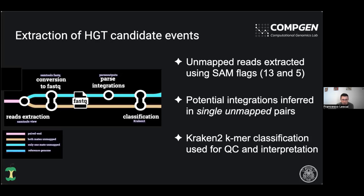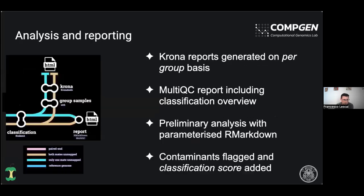We use the bitwise flag 13 and 5 for filtering, and then further parse the potential integration for single unmapped reads using the mapping coordinates of the mapped member of the pair. We are using Kraken 2 to classify taxonomically the reads, and we have chosen this tool because we use the k-mer classification given as a sliding window in the NGS read as a way for interpreting results and doing further QC on the outcome of the taxonomic classification.